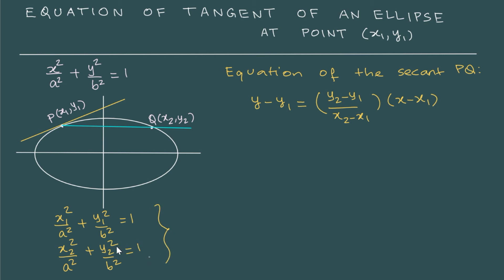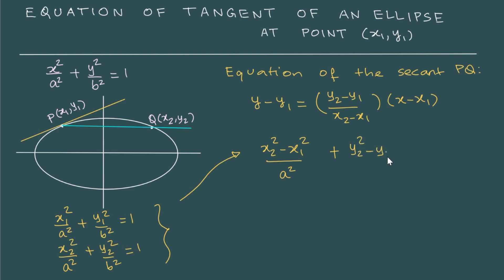Now, subtracting the first equation from the second, we get x2 squared minus x1 squared by a squared, plus y2 squared minus y1 squared by b squared equals 0. Opening these up using the identity a squared minus b squared equals (a+b)(a-b), we can write this as x2 minus x1 times x2 plus x1 by a squared.